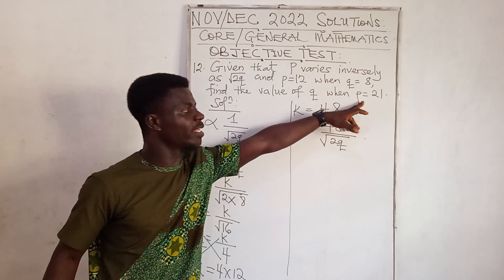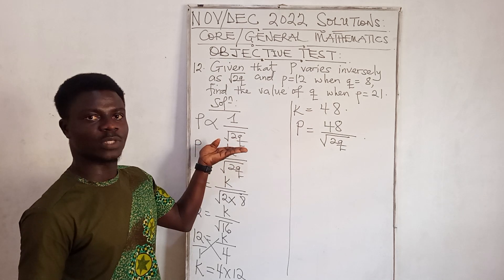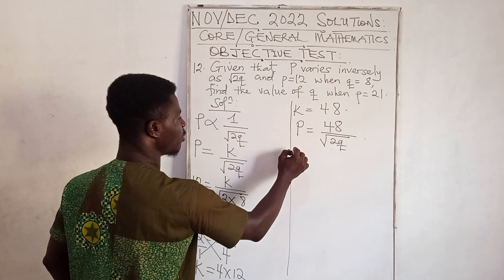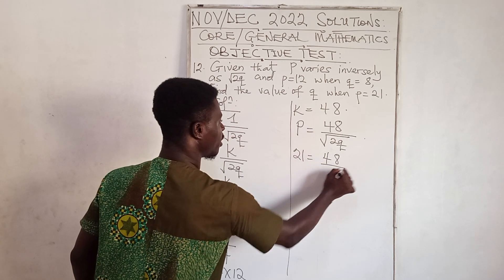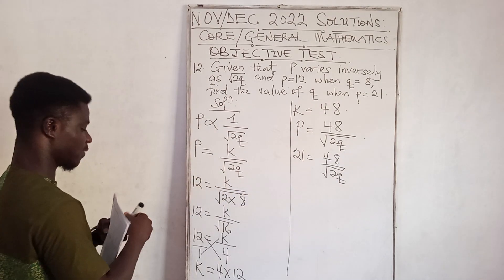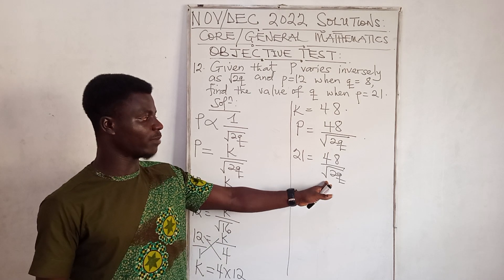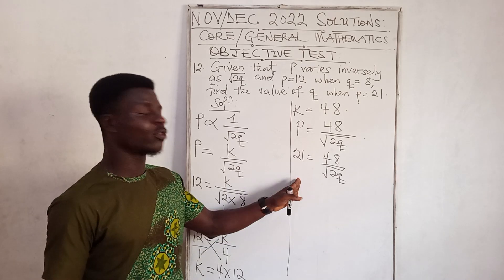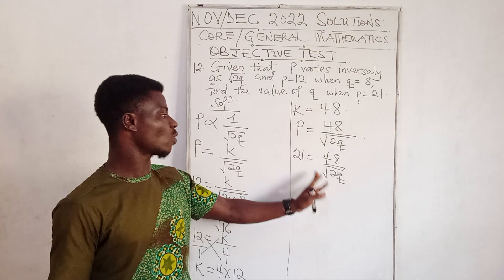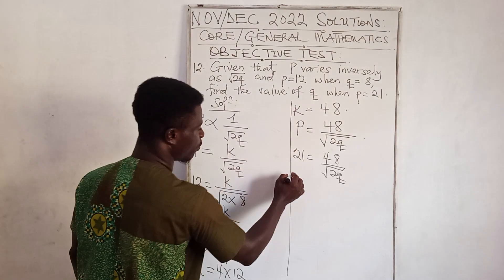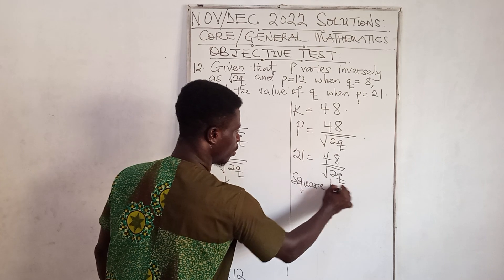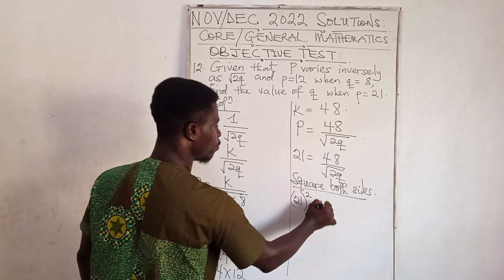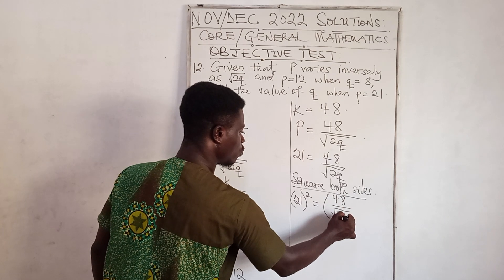They say find the value of K when P equals 21. Starting with the equation P = 48/√(2K), substitute P equals 21. To solve, we can square both sides of the equation. Squaring both sides gives 21 squared equals (48 over √(2K)) squared.